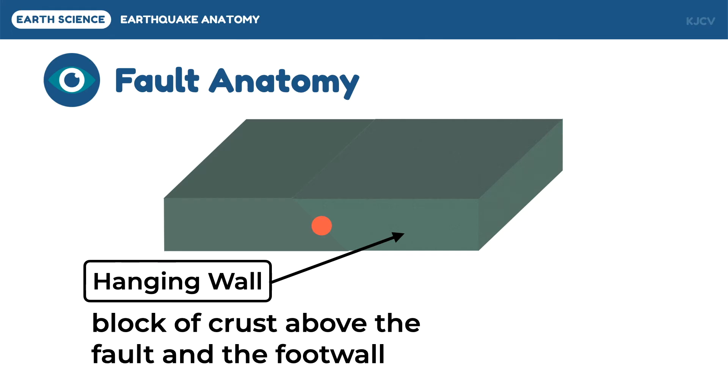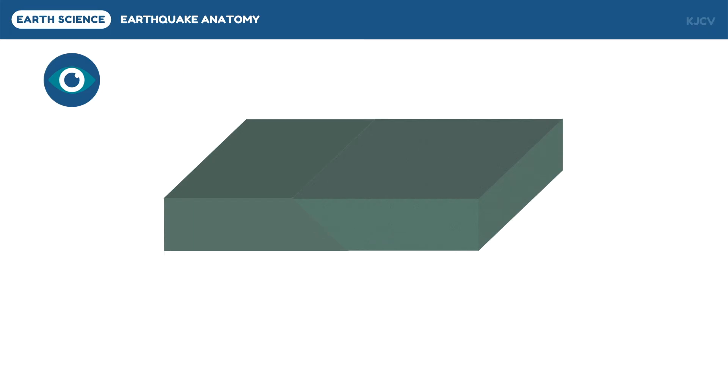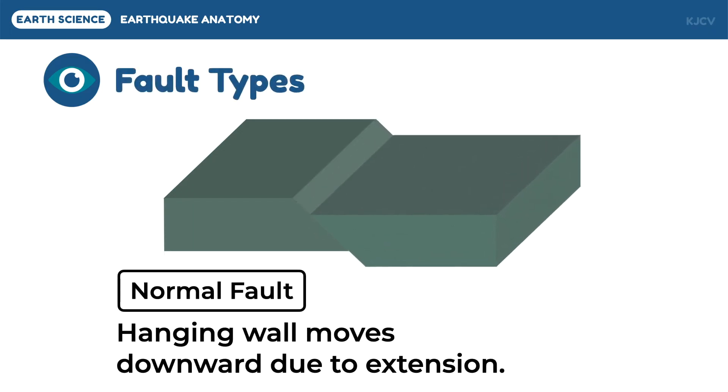If the hanging wall went down, it is called a normal fault. This is due to the extensional forces which seem to pull the two blocks of rocks away from each other. To easily remember this, the normal consequence for any hanging object is to fall down, thus the name normal fault.